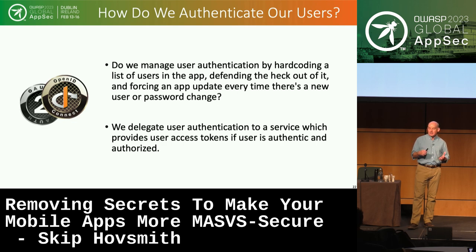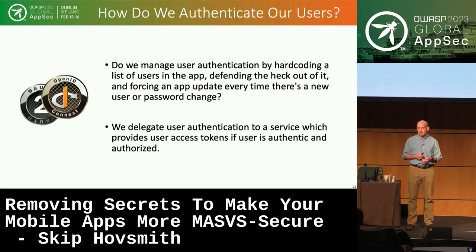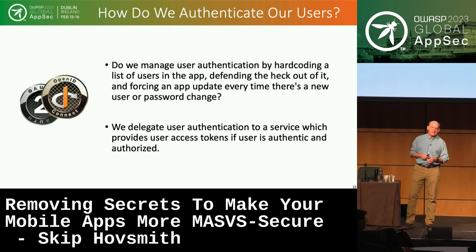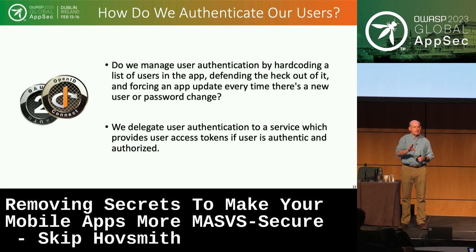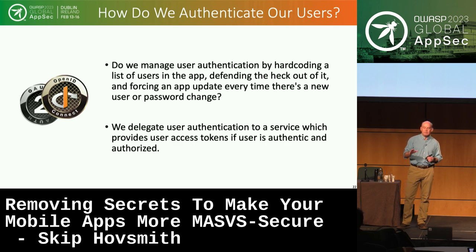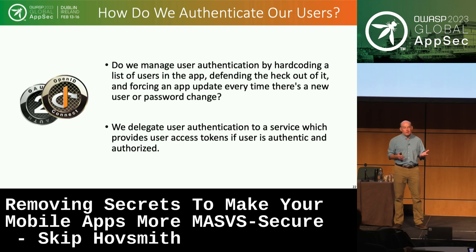I want to make an analogy to user authorization. When we authenticate users, we don't hard-code a list of users into the application and force an app update every time we add a new user. We delegate that to an outside entity — adding users, changing passwords, changing authentication fingerprints can all be done in the cloud without impacting the app. We use OAuth and it works very well. So why do we do the same thing for the secrets we're trying to protect?